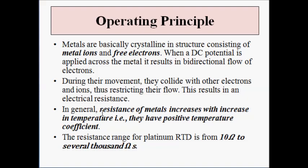The resistance of the metal increases with an increase in surrounding temperature. The movement of electrons and their collision with other metal ions and free electrons causes electrical resistance, which is directly related to the surrounding temperature. When the surrounding temperature increases, the electrical resistance of metals increases, and when the surrounding temperature decreases, the electrical resistance also decreases. This is called the positive temperature coefficient of metals used for fabrication of RTD.